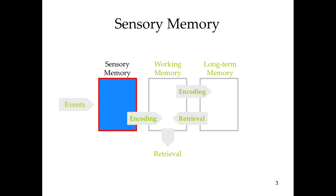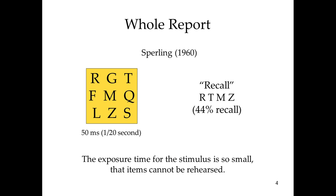Let's break it down into sensory memory. What we see is that we have limited recall for certain amounts of information. Sperling did a study where he flashed an image for 1/20th of a second — a very brief period. When participants were asked to recall the information, there was only about 44% success. The exposure time for the stimulus is relatively small and therefore the information can't be rehearsed, so it spends very briefly in working memory but doesn't get fully integrated.